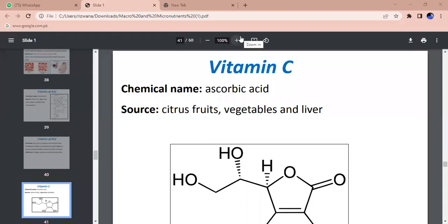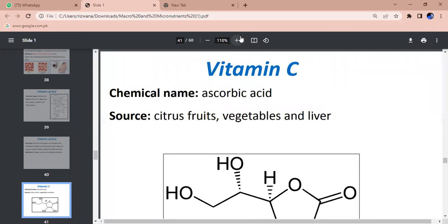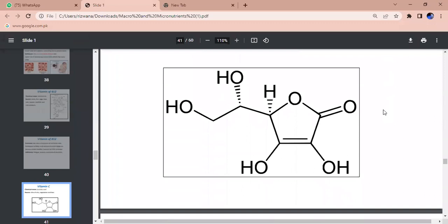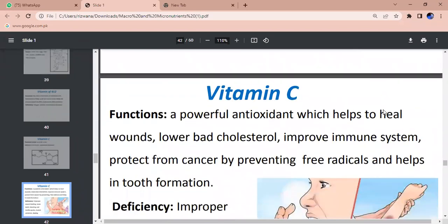What is the chemical name of ascorbic acid? What are the sources of vitamin C? Citrus food, vegetables and livers - most common citrus food. This is the chemical structure of vitamin C.